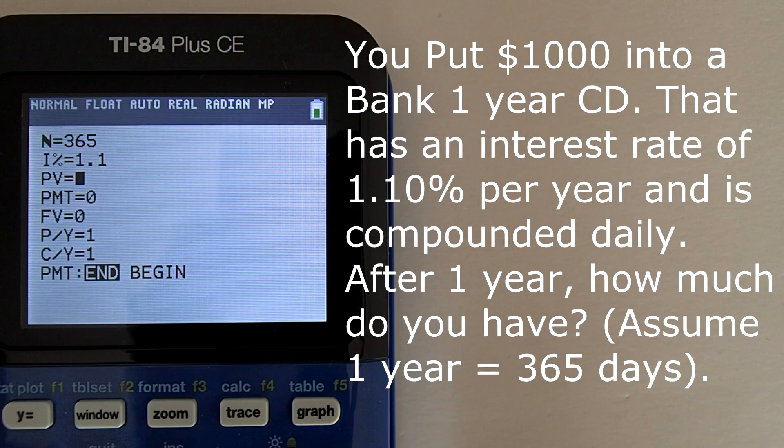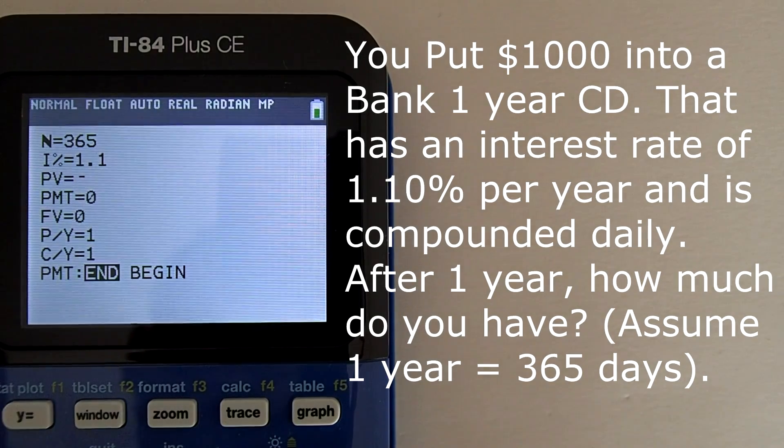For PV, present value, we take $1,000 out of our pocket to fund this CD. Thus enter a negative 1,000.